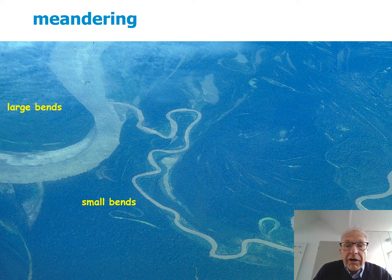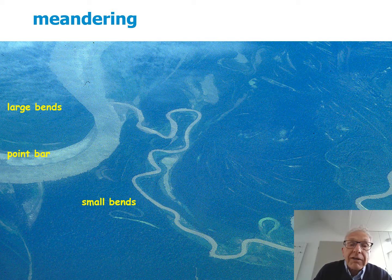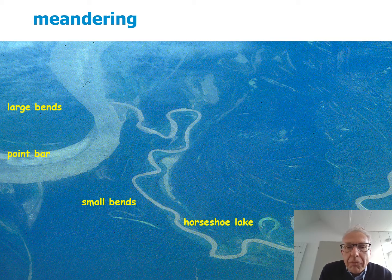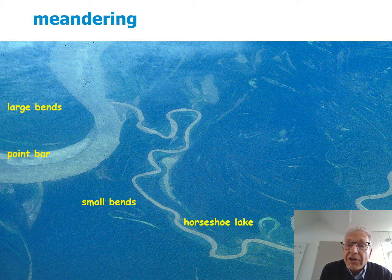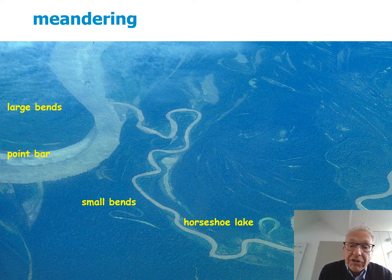There are features associated with meanders — for instance, the point bar, which is an exposed part of the riverbed at the shallow inner bend. You can also see that it is dynamic, because some bends may be cut off and remain in the landscape as an abandoned channel, a horseshoe lake, as a scar — a relic from past times.